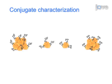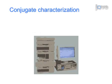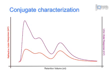Secondly, the conjugates are physico-chemically characterized to determine the exact coupling degree by performing high-performance size exclusion chromatography, or HPSEC, with sequential refractive index and ultraviolet detection.